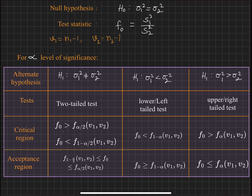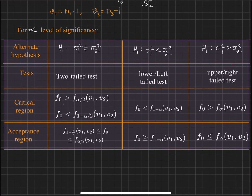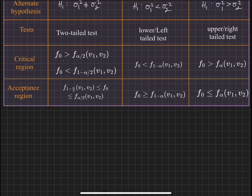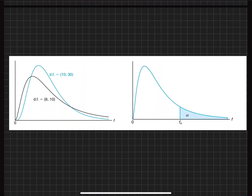The first case is called a two-tailed test, the second is lower or left-tailed, and the third is upper or right-tailed. In the two-tailed test, both sides have a rejection region. In the lower or left-tailed test, the left portion is the rejection region. In the upper or right-tailed test, the right side is the rejection region. The critical region for the two-tailed test is F naught greater than F(alpha/2, v1, v2) or F naught less than F(1-alpha/2, v1, v2).